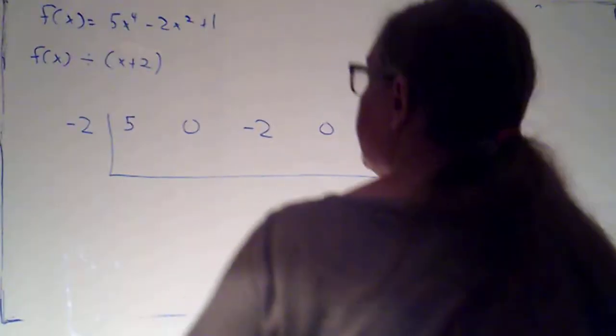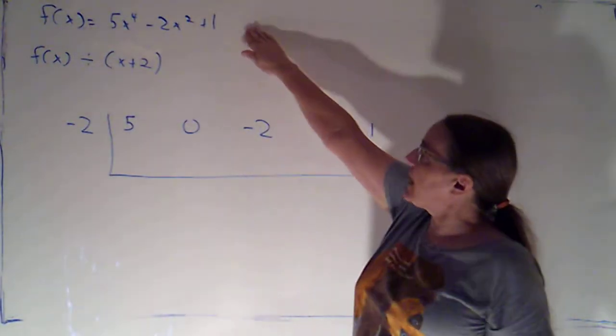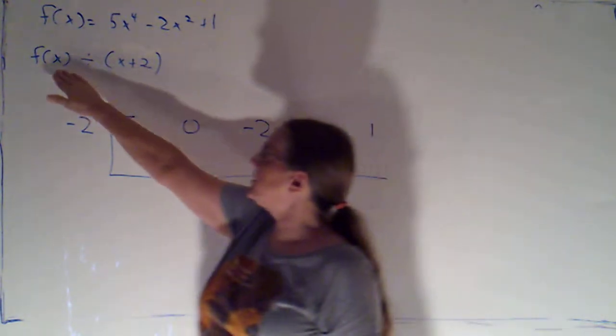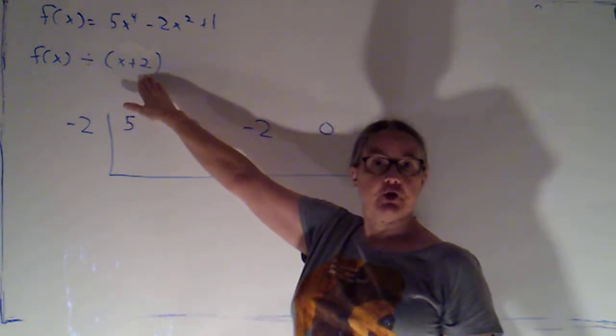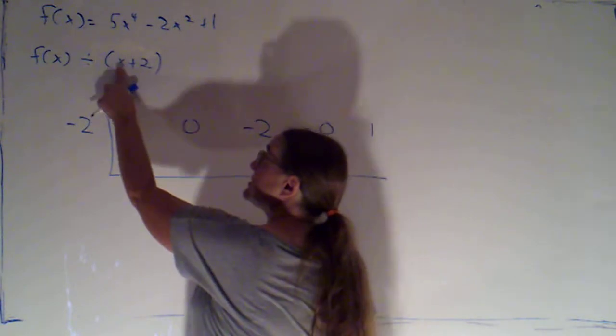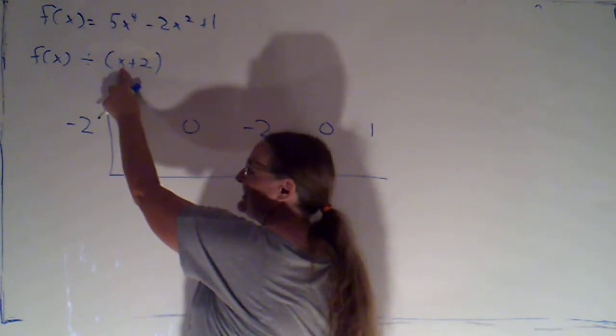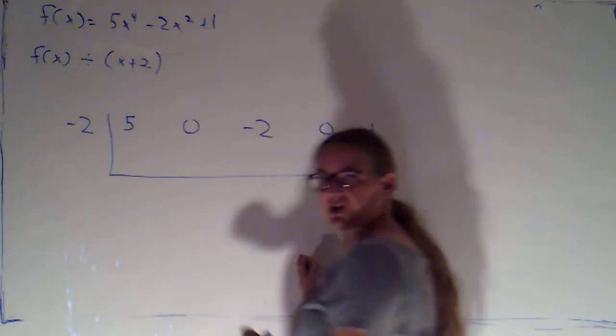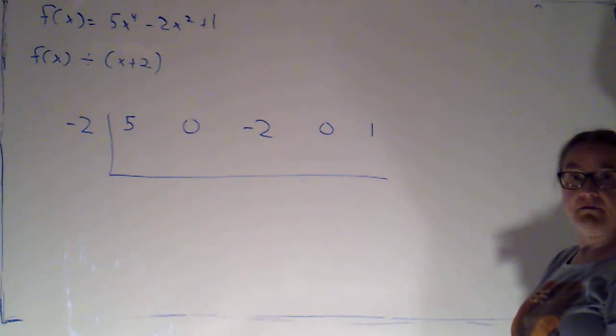At the end of the last video, I gave you this problem to try. Here's our polynomial f of x, and we're going to do f of x divided by x plus 2. Now because that is one copy of x minus a number, remember plus 2 is minus negative 2, we can use synthetic division.